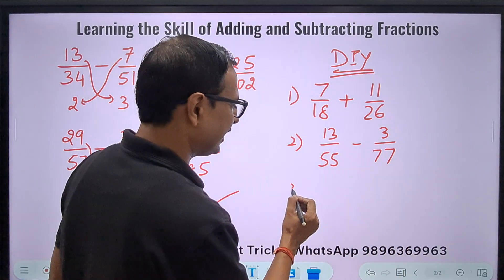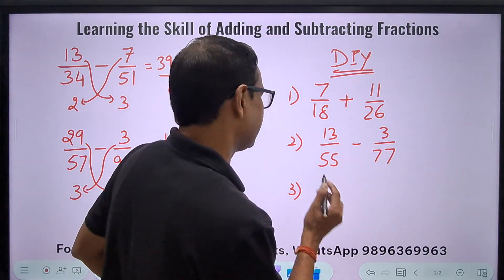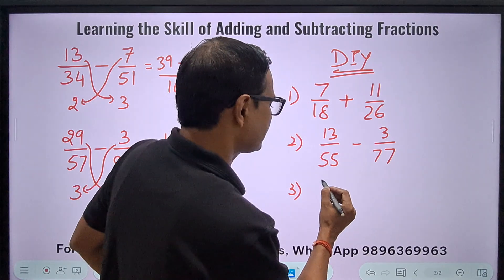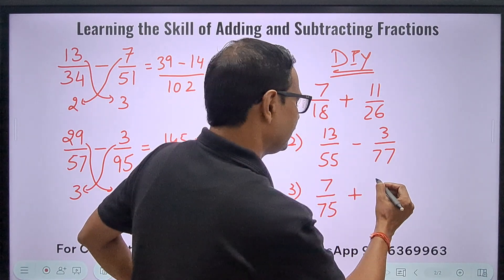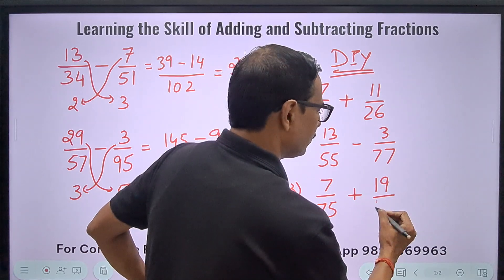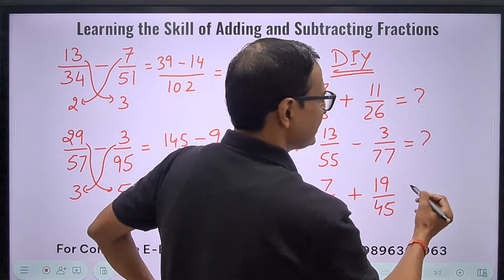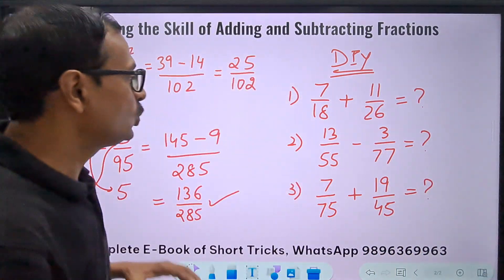And the last one: let's take a multiple of five, maybe easier. Let's do 7/75 and add 19/45 to that. So you have to tell me what are the answers of these three questions using the method which I told you. And if it works, do share this video with all your friends. That is really, really important, you know, spreading education. And you can contribute to the channel by spreading the links of the videos with your friends.